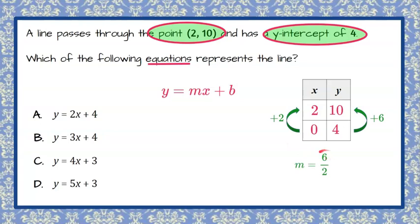Slope is our change in y, which is 6, over our change in x, which is 2, and 6 divided by 2 is 3, so we know that the slope of our line is 3.